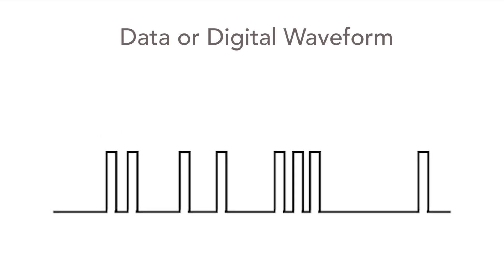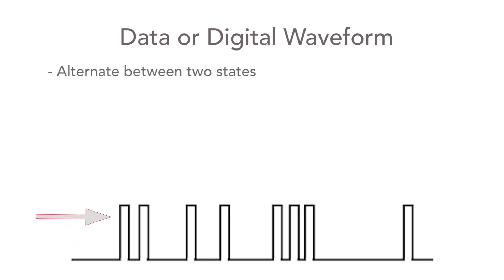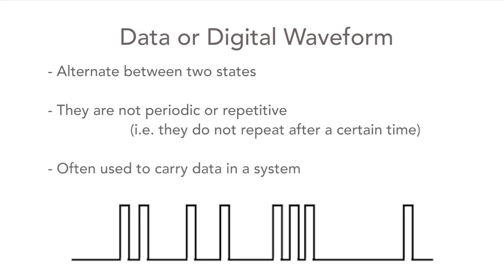Finally there are what might be just called digital waveforms. These again alternate between two states but they're not periodic and don't repeat after a specific time. They may carry data or signals from various digital points but the main thing is they're not repetitive.